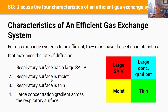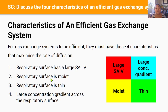In the previous lesson you learned about why gas exchange is so important for the survival of animals. It's important because gas exchange allows animals to absorb the oxygen they need to carry out aerobic cellular respiration to make the energy and ATP they need to survive, and equally to get rid of the carbon dioxide waste made by aerobic cellular respiration. So because gas exchange is so important, it's important for gas exchange systems to be efficient.